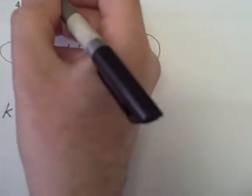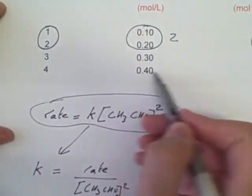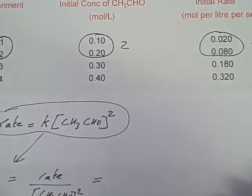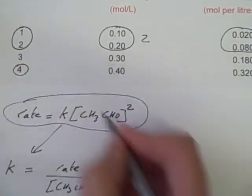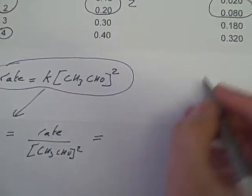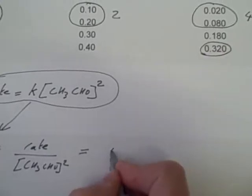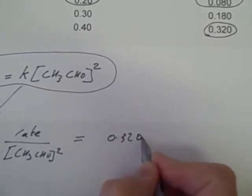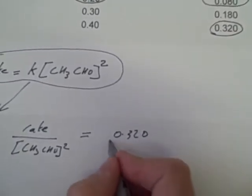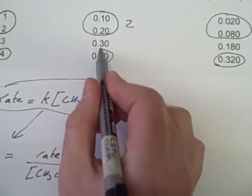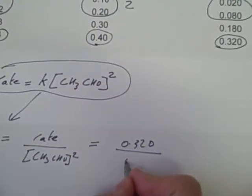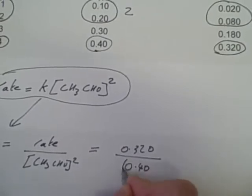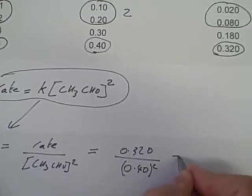Now what I can do is take any one of these four experiments and pick the data. So I may as well take the fourth experiment. And the rate, well it was 0.320 moles per liter per second. Concentration, 0.40 moles per liter. Of course I've got to square it because it's second order.